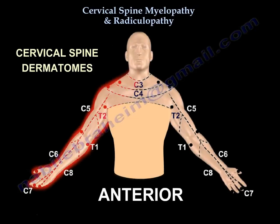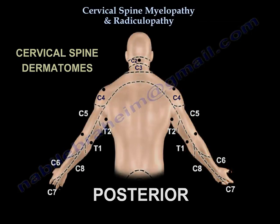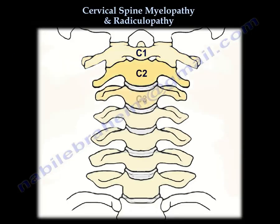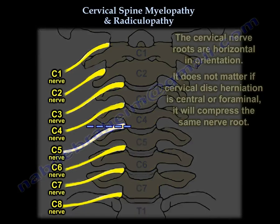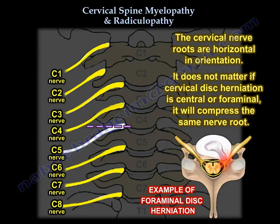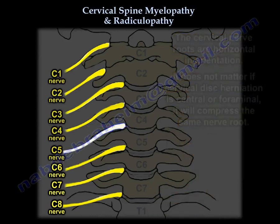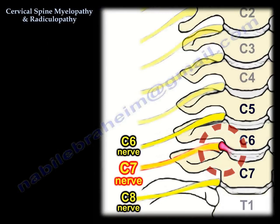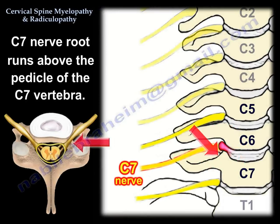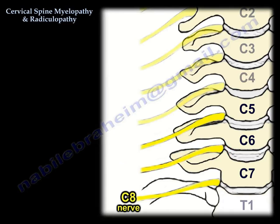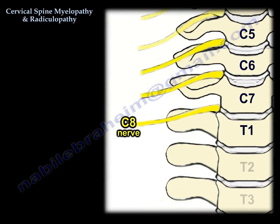It is easy to remember the dermatomes and muscle function once you understand the arrangement of these nerve roots. There are seven vertebrae but eight nerve roots. The cervical nerve root is horizontal in orientation, so it doesn't matter if the disc is central or foraminal — it will affect the same nerve root. For example, a disc at C6-C7 will get the C7 nerve root. This nerve root runs above the pedicle: C7 runs above the C7 pedicle, C8 runs above the T1 pedicle, and T1 runs below the T1 pedicle.